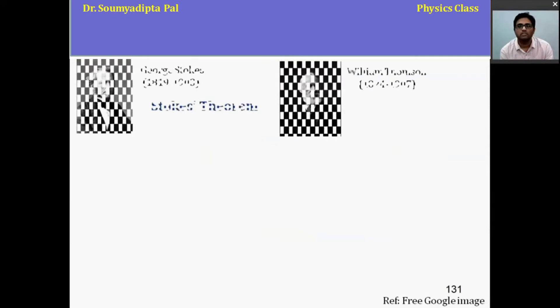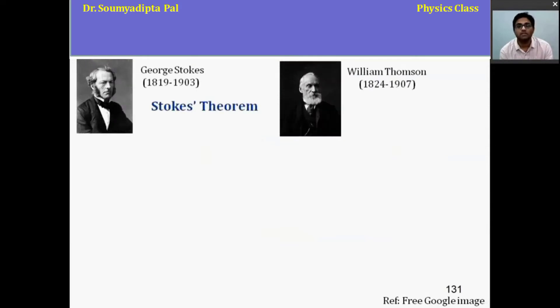The theorem is named after Irish mathematician and physicist Sir George Stokes. And what we call Stokes theorem was actually discovered by Scottish physicist Sir William Thompson. Stokes learned of it in a letter from Thompson in 1850. So this was the history of Stokes theorem.